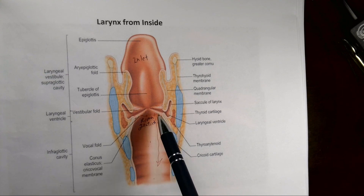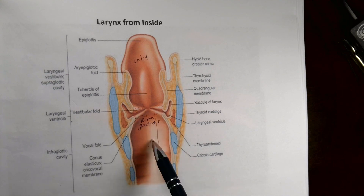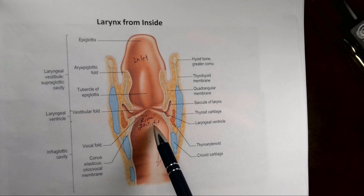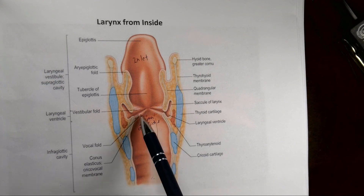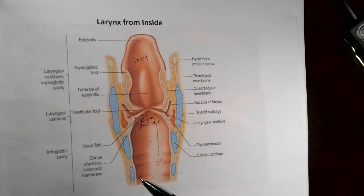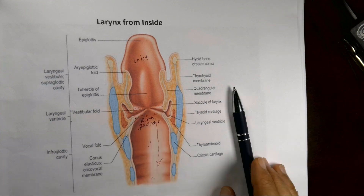The third part is the outlet — the infraglottic part — which extends from the vocal cord down to the trachea.